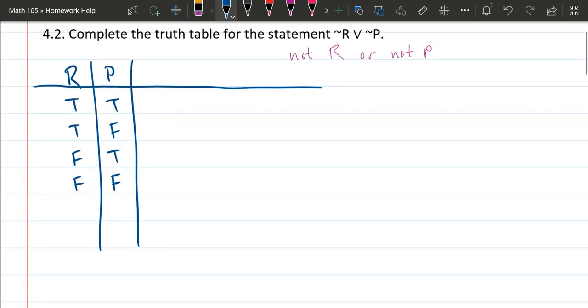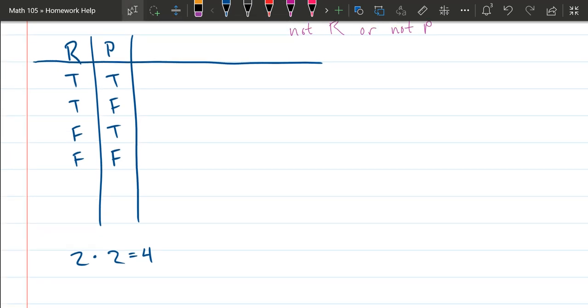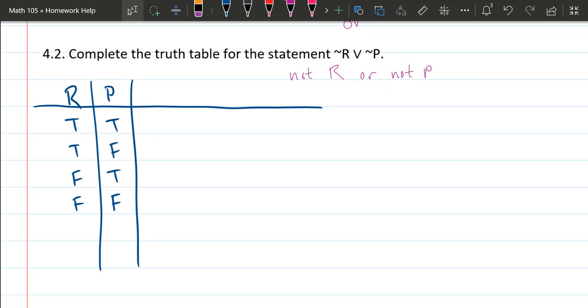Without going too far into number theory, the reason we have 4 is because the first column had two choices, the second column had two choices. When you multiply them together, you get four choices total. If we had three inputs like R, P, Q, you would do 2 times 2 times 2, which would be 8—you'd have 8 rows. I don't think you have a problem that goes beyond 3, but that's why when you have 2, there are 4 rows.